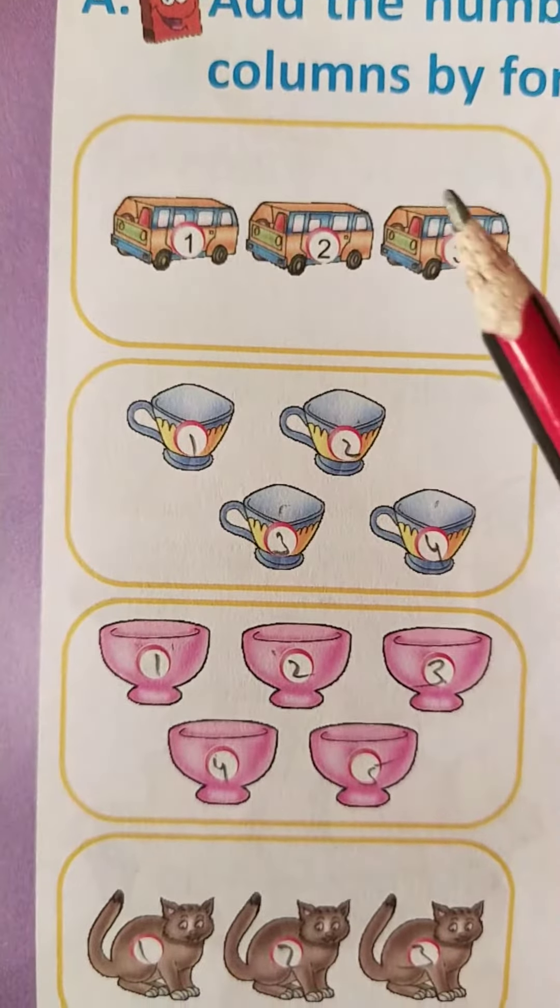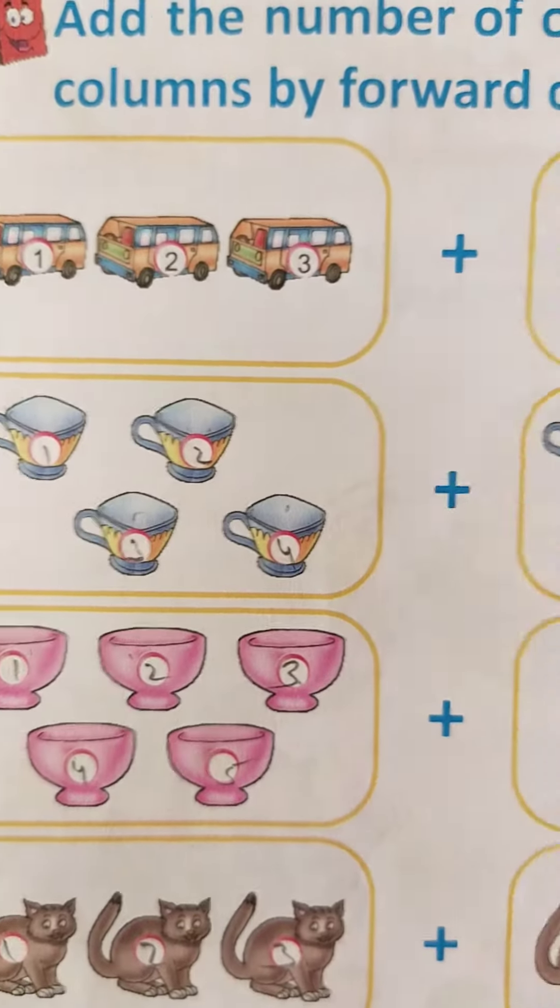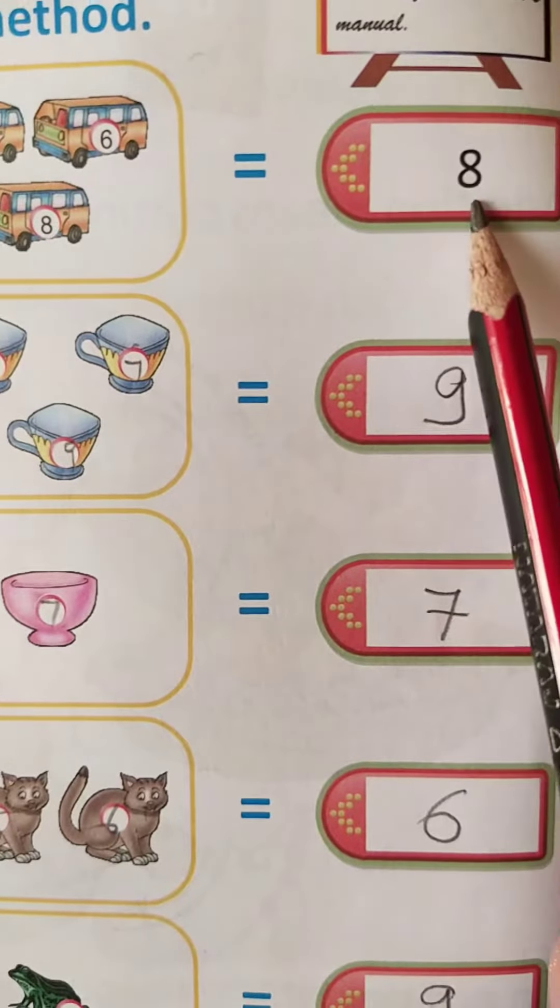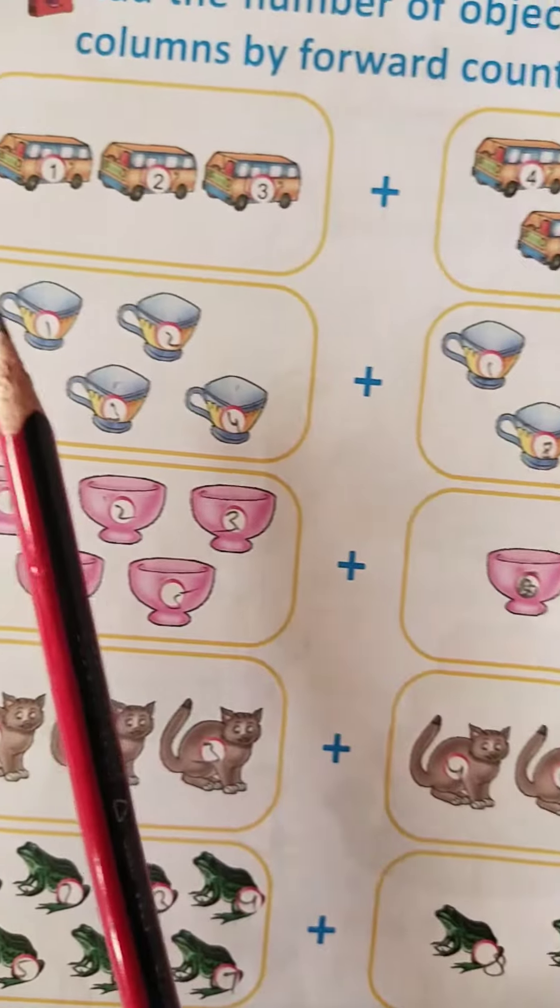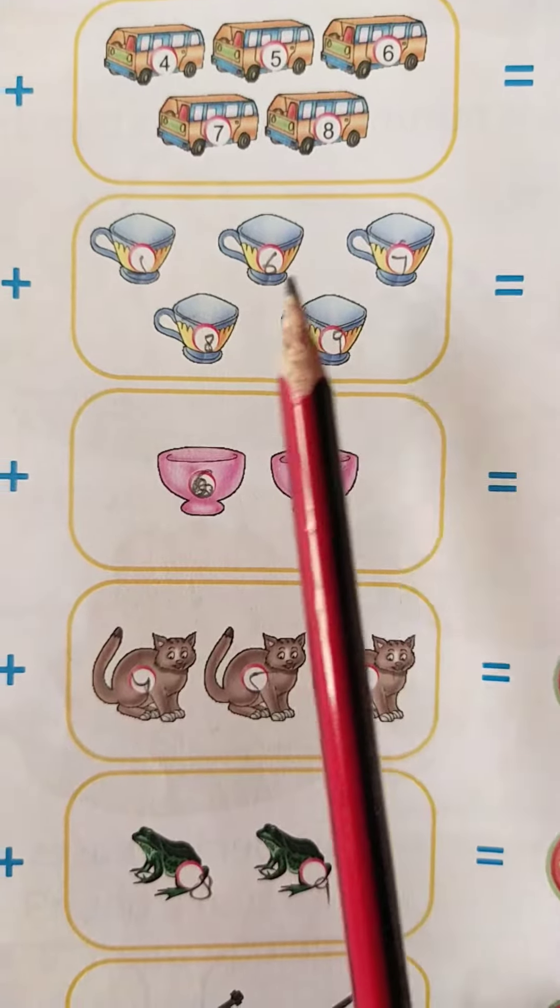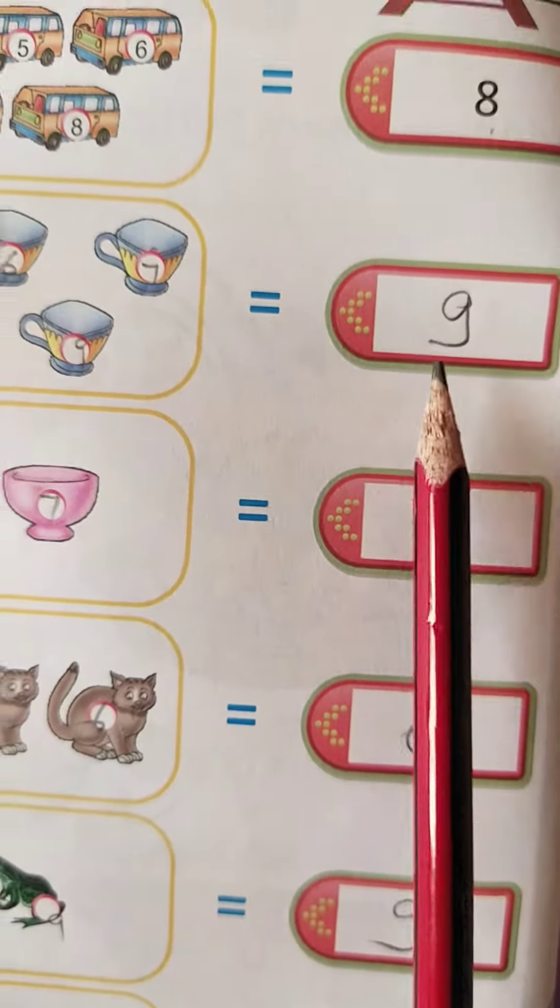Students, here you can see 1, 2, 3 buses plus 4, 5, 6, 7, 8. So here total buses are 8. So you will write 8 here. And here 1, 2, 3, 4 cups and here 5, 6, 7, 8, 9. So here the total cups are 9.